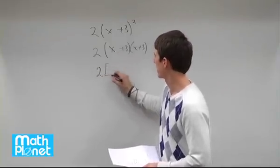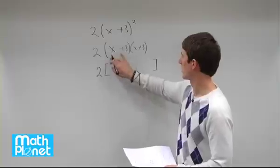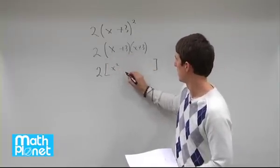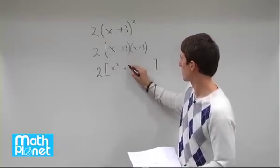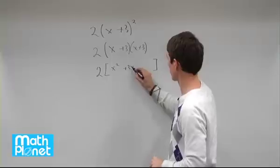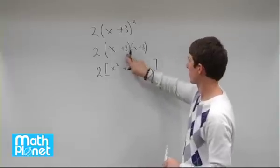So we'll still have 2 times some quantity. Now that new quantity will be given from this. So we have x times x is x squared, we have 3 times x is 3x, then we have x times 3 which is also 3x, and then we have 3 times 3 which is 9.